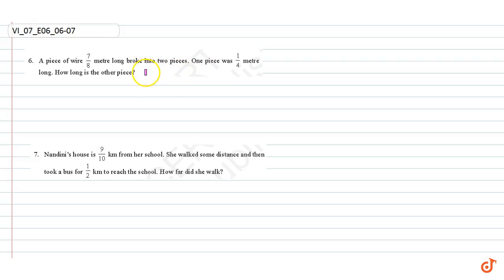In this video we are going to solve question number six and seven. Question number six: a piece of wire seven by eight meter long broke into two pieces. One piece was one by four meter long. How long is the other piece?